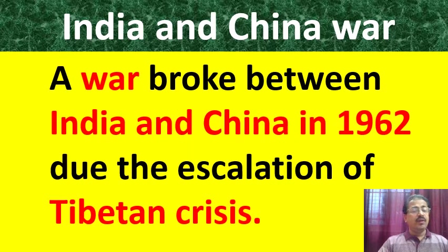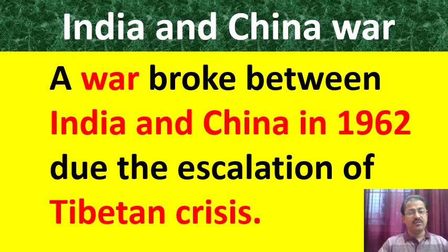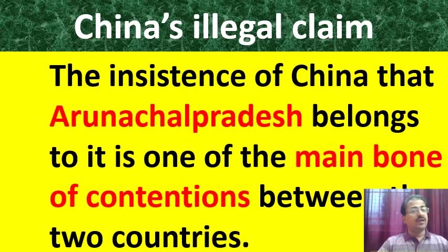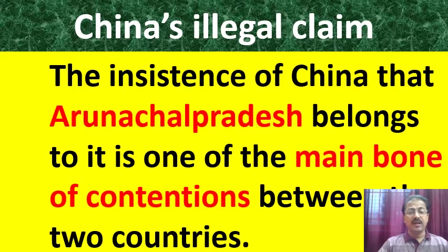Though Panchashila was signed, the principles were violated by China unilaterally. In 1962, because of the Tibetan crisis, China and India went to war. India was defeated and 10,000 square miles of Indian territory was illegally encroached by China. China's illegal claim over Arunachal Pradesh has strained the relationship, and India has strongly objected to this illegal claim.